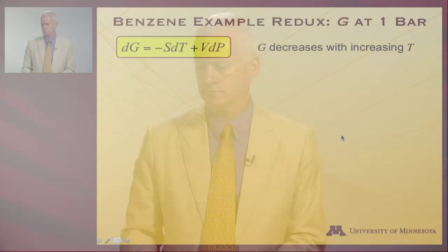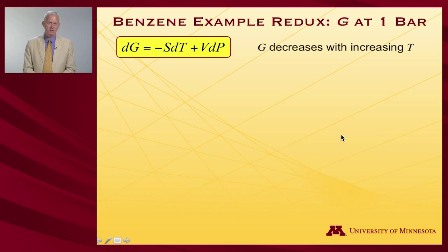We've made some connections between the phase diagram and various thermodynamic quantities. Let's continue and focus in particular on the Gibbs free energy, coming back to the case of benzene and its free energy at one bar of pressure. A fundamental equation involves the independent variables for Gibbs free energy: dG equals minus S, the entropy, dT, plus V, the volume, dP.